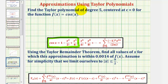We'll go through the process of determining the Taylor polynomial centered at c equals zero using the definition of a Taylor polynomial centered at c. Notice if c is zero, all these function values would be evaluated at zero, and instead of having the quantity x minus c, we would just have x raised to various powers. Because we're looking for the degree five Taylor polynomial, we'll begin by determining the first five derivatives of our function.